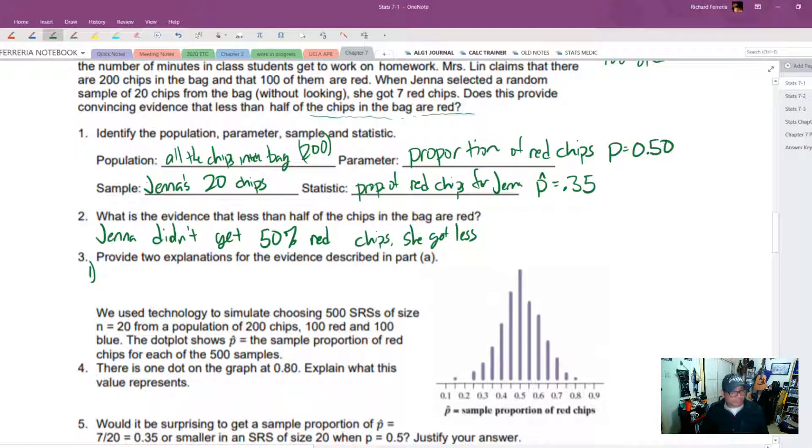Next, find two possible explanations. So, explanation one: sampling variability. She got less, or she only got seven red chips by chance. The bag wasn't fixed. It was just her luck to only get seven red chips. The other explanation is there are less than 100 red chips, so less than 50% red chips. And if that's true, then of course Jenna's going to get less than 50%. One of these is true. Maybe both of these are true, but one of these is definitely true.